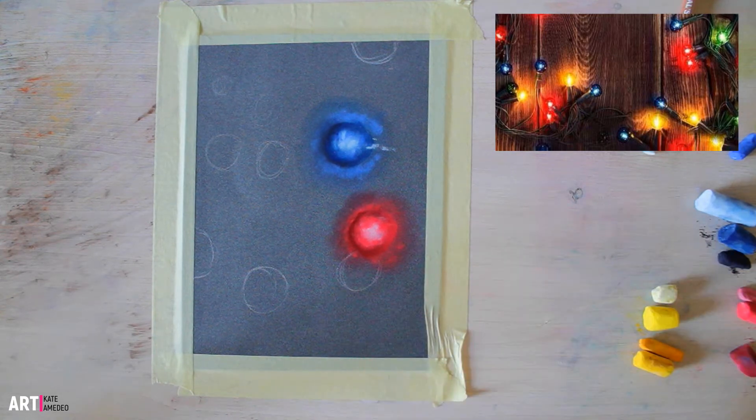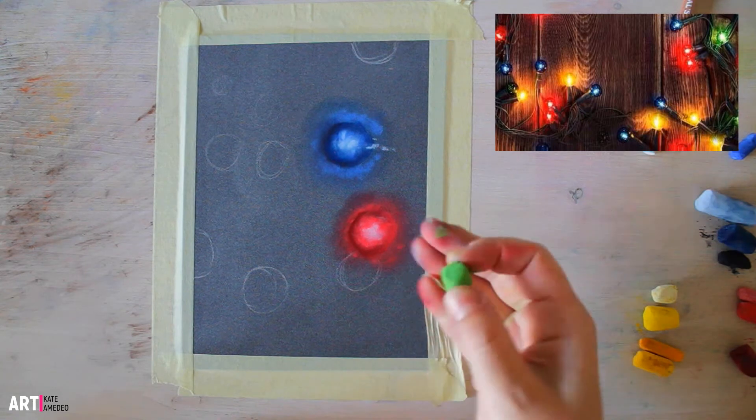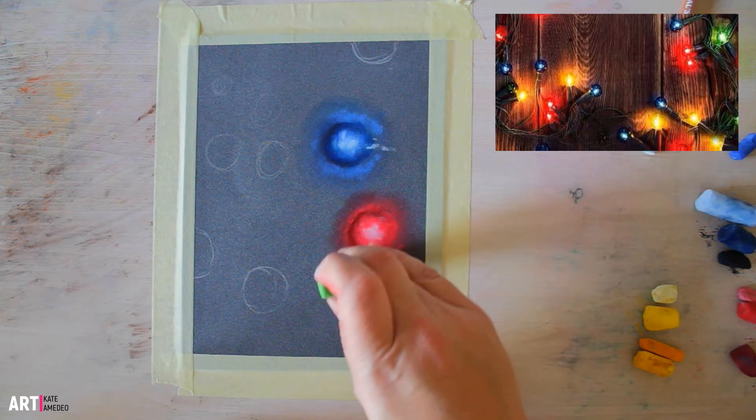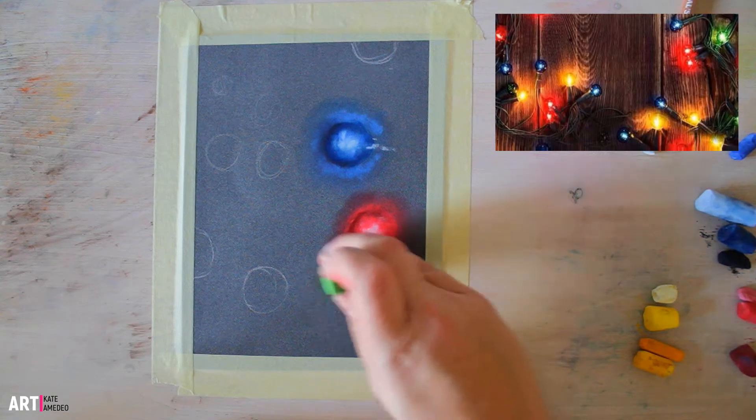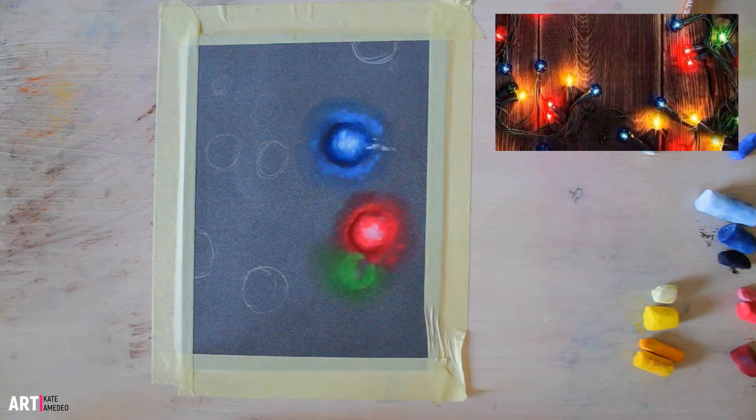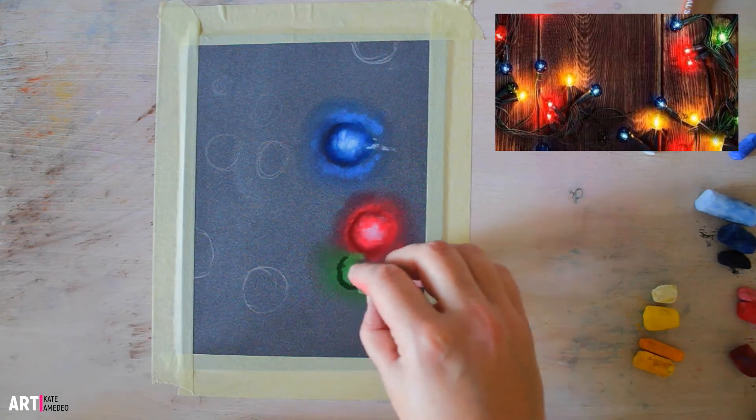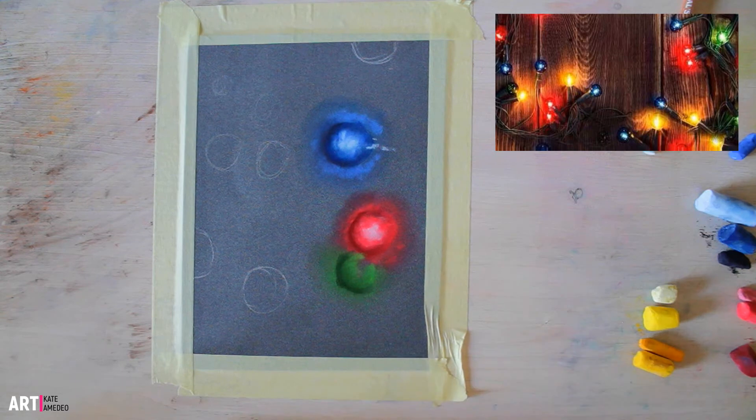Let's do this other light here. I was thinking we can do green next to it, not the red like I have in the reference, but a green color. I'm using this very bright green and immediately I'm going to pull it out to create that glow. Then I'm going to add the dark green rim to my light and blend it towards the inside.